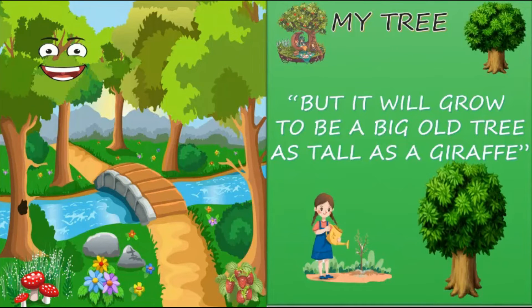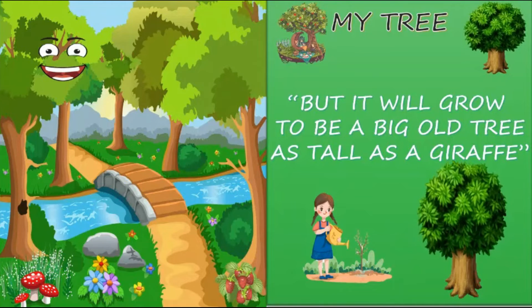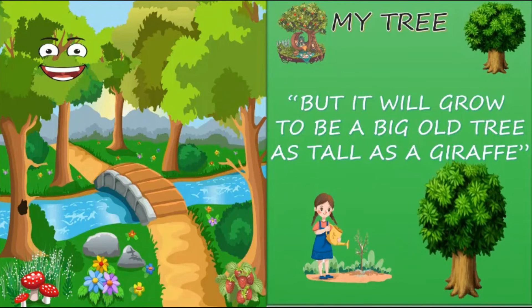Line 4: 'But it will grow to be a big old tree, as tall as a giraffe.' She is comparing the little tree to the height of a giraffe. Right now it is a very small tree, only up to her knee, but one day it will grow into a big old tree — even as tall as a giraffe. What is the spelling for 'giraffe'? G-I-R-A-F-F-E. Giraffe.